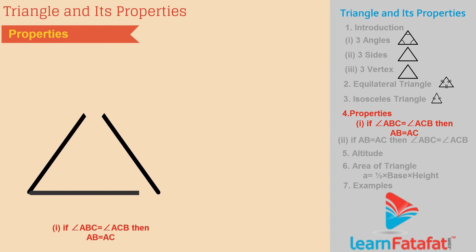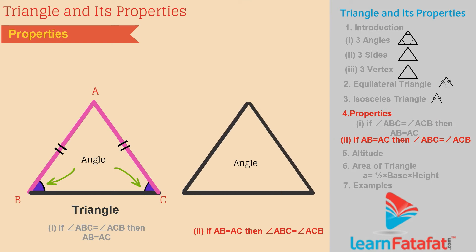Properties. In triangles, the angles opposite to equal sides of a triangle are equal. Opposite to this, the sides opposite to equal angles of a triangle are equal.